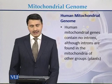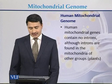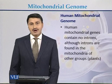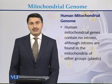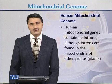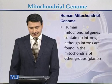Human mitochondrial genes contain no introns, although introns are found in the mitochondria of other groups like plants. This is a key difference between the mitochondrial genome of humans and that of plants — in the human mitochondrial genome there are no introns, but in the mitochondrial genomes of plants some introns are present.